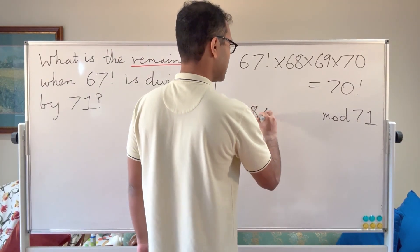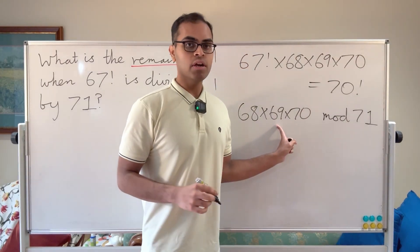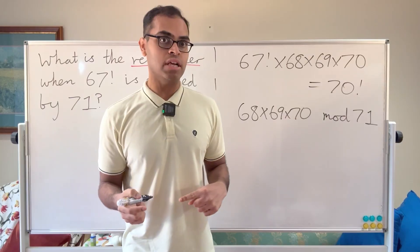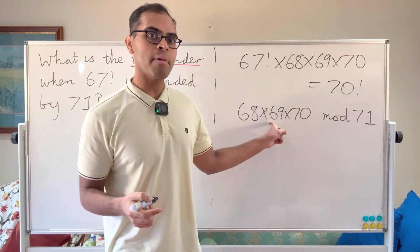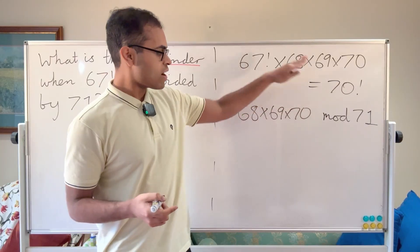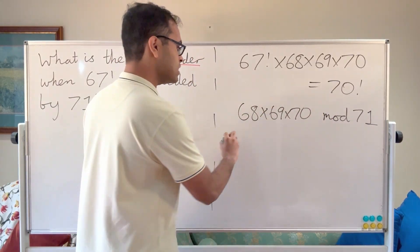First of all, 68 times 69 times 70 modulo 71. 68 has a remainder of minus 3, 69 has a remainder of minus 2, and 70 has a remainder of minus 1. So a quick way to find the remainder of this product divided by 71 is just to write it in that way.